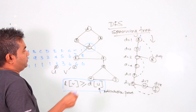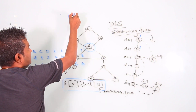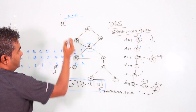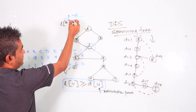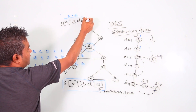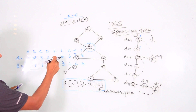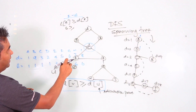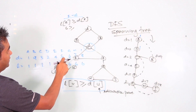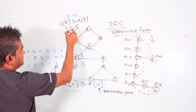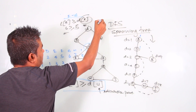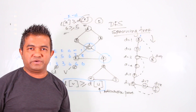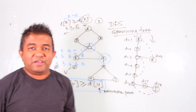Now let's check F and G. F is parent, G is child. Lowest index of G is 6, depth index of F is 5. Since 6 is greater than 5, the condition is true — F IS an articulation point. So F is also a critical node in this graph.